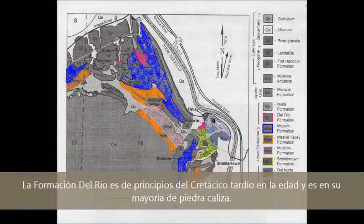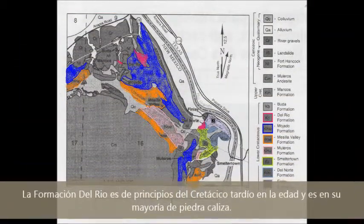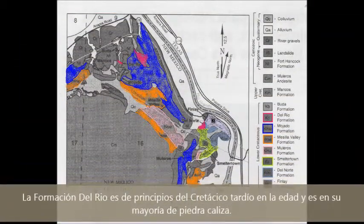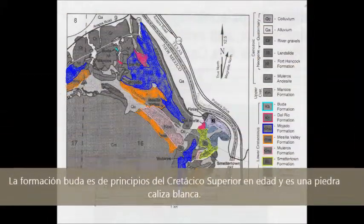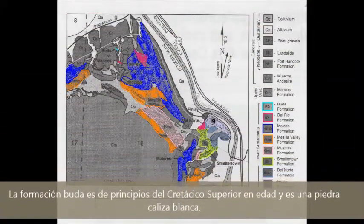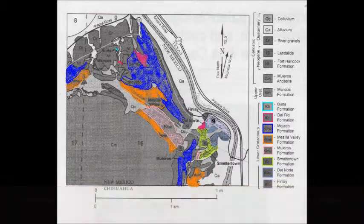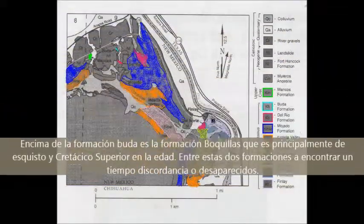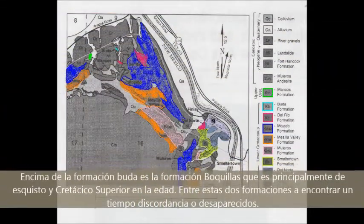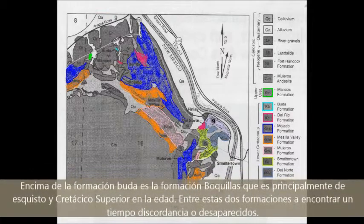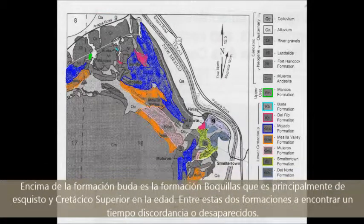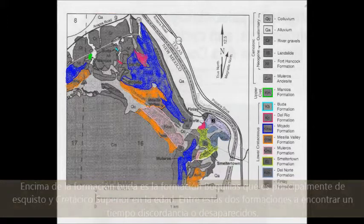The Del Rio Formation is early late Cretaceous in age and is mostly limestone. The Buddha Formation is early late Cretaceous in age and is white limestone. On top of the Buddha Formation is the Bokias Formation, which is mostly shale and late Cretaceous in age. Between these two formations you find an unconformity, which means there is missing time between them.